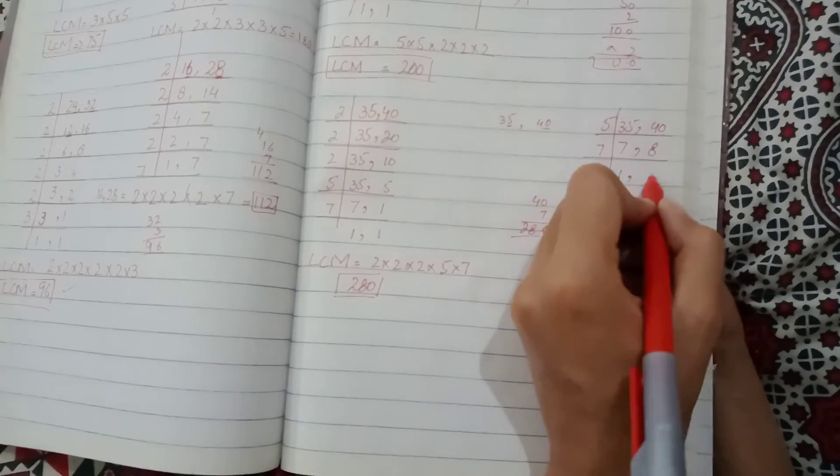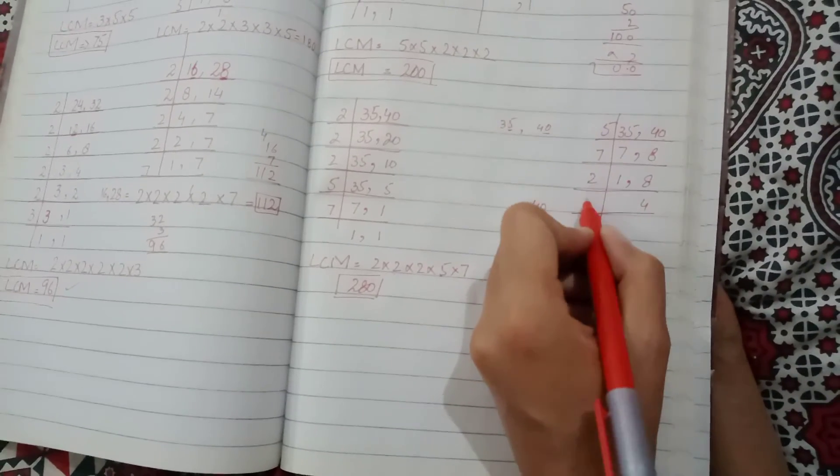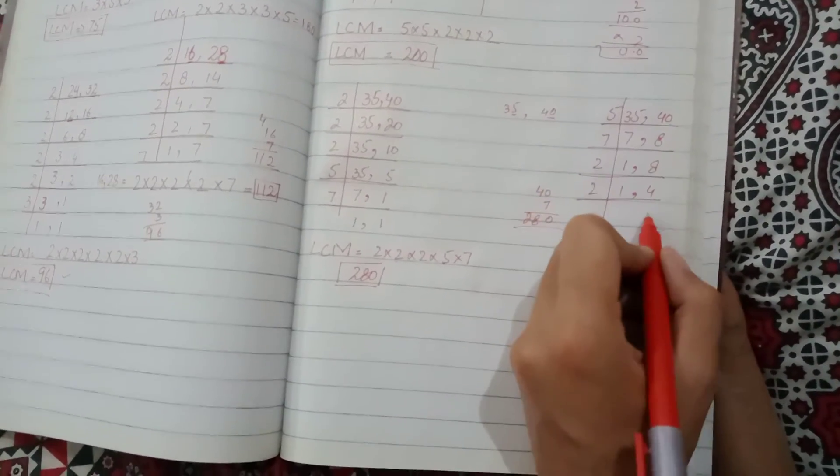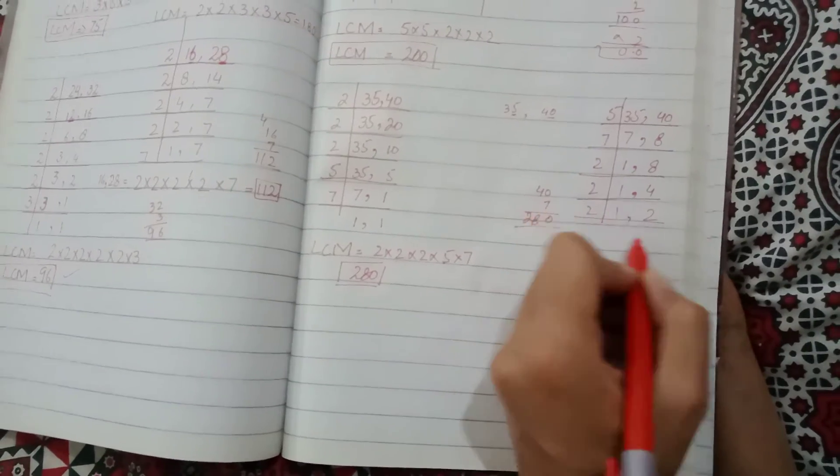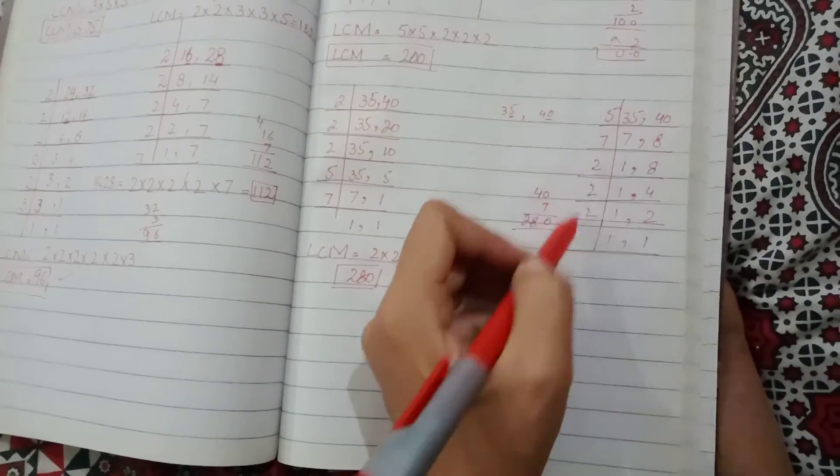7 into 1 is 7, 8 as it is. Now 2 into 4 is 8, and 2 into 2 is 4. Now 2 into 2. Then it comes to me again.